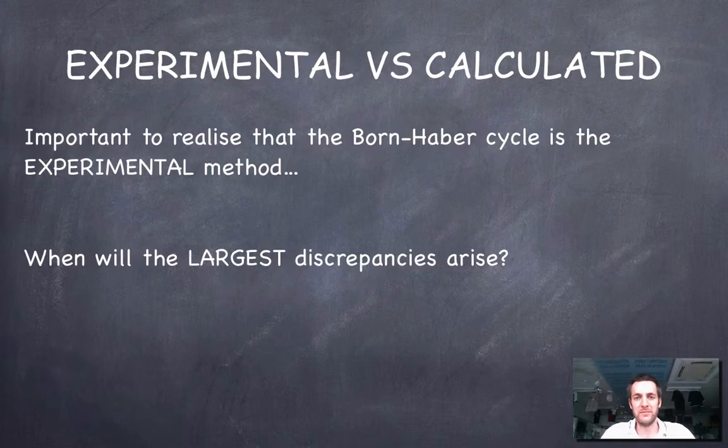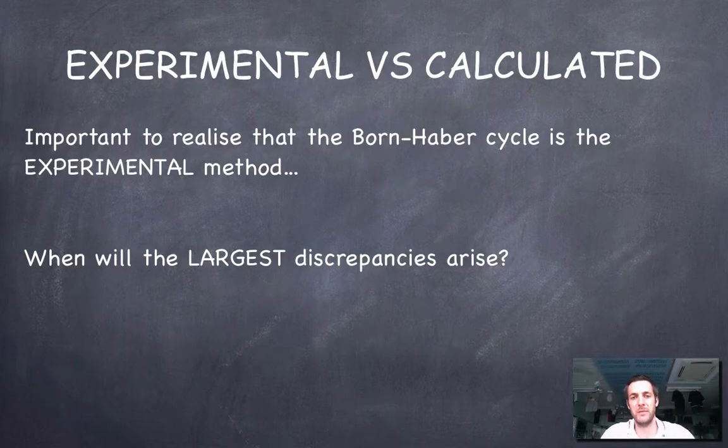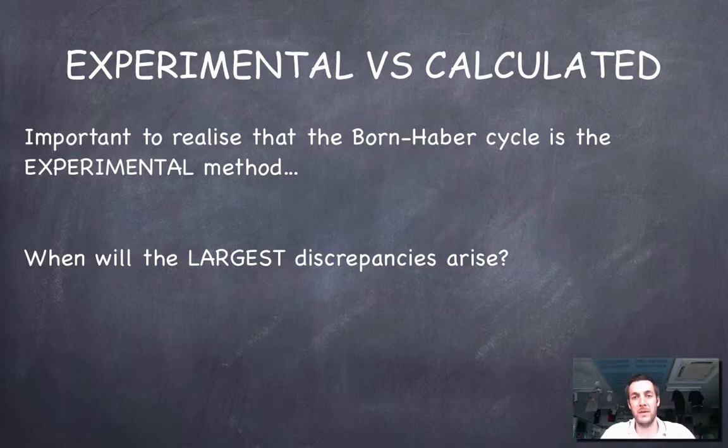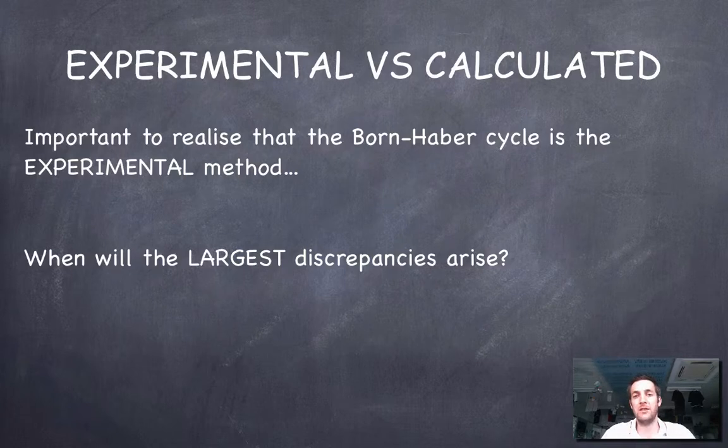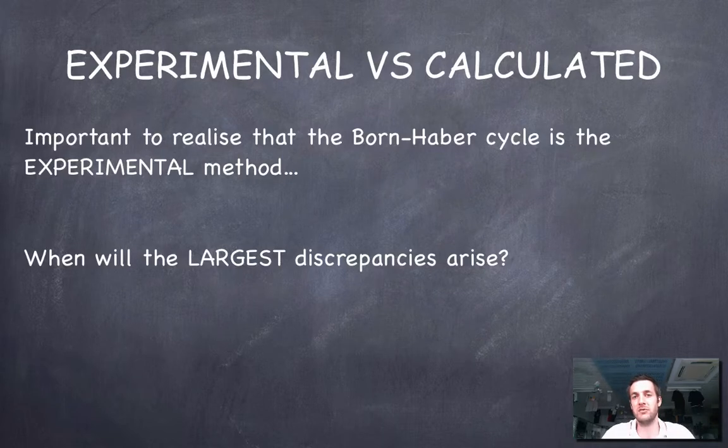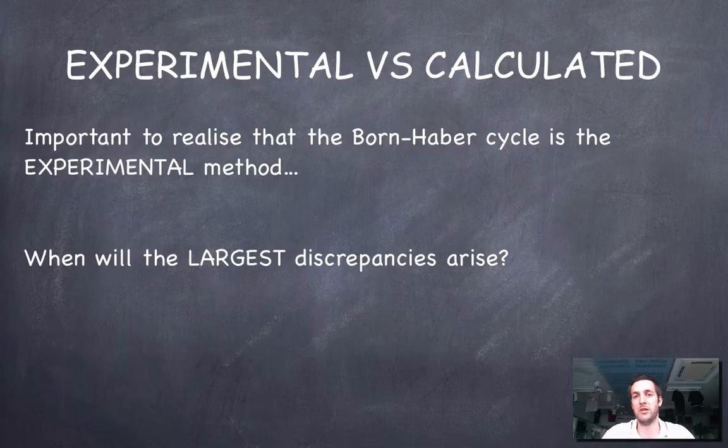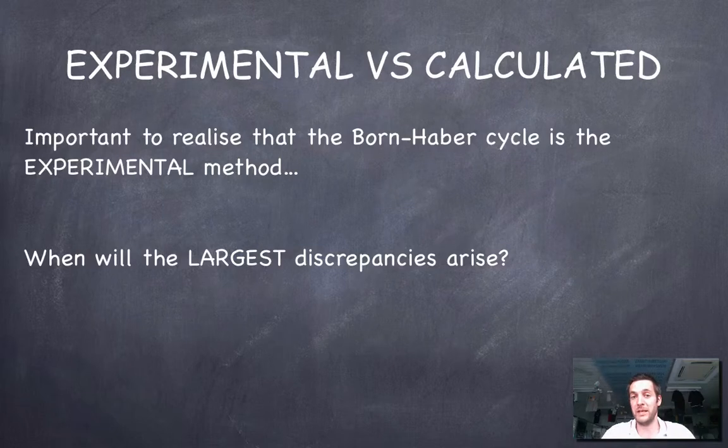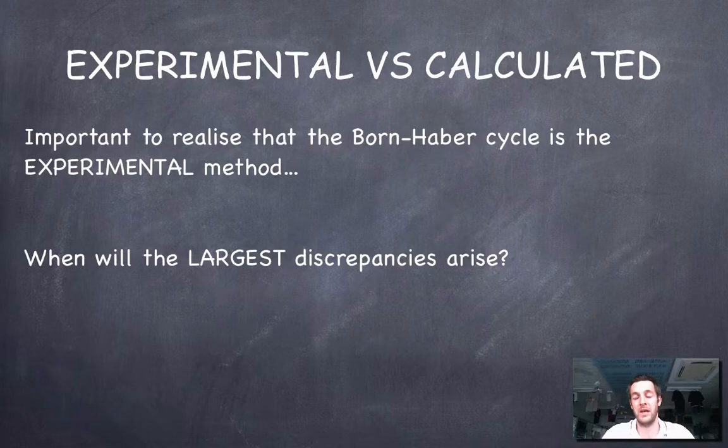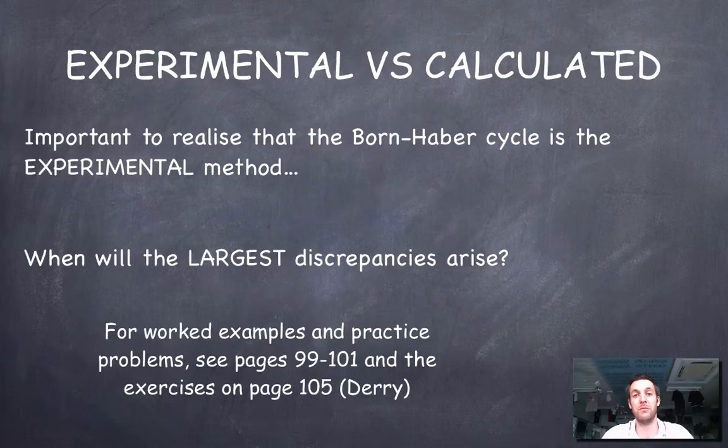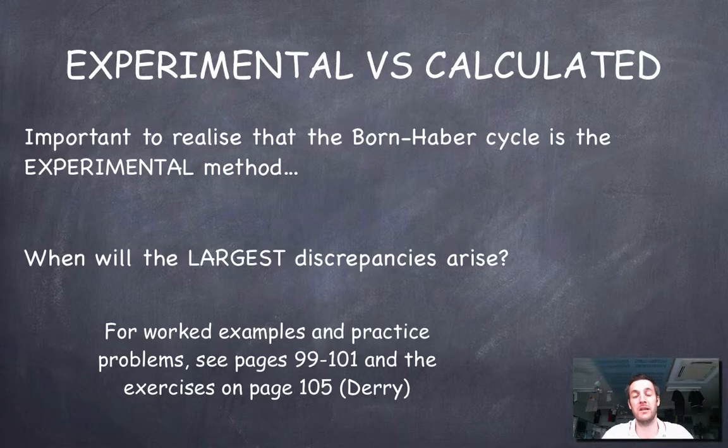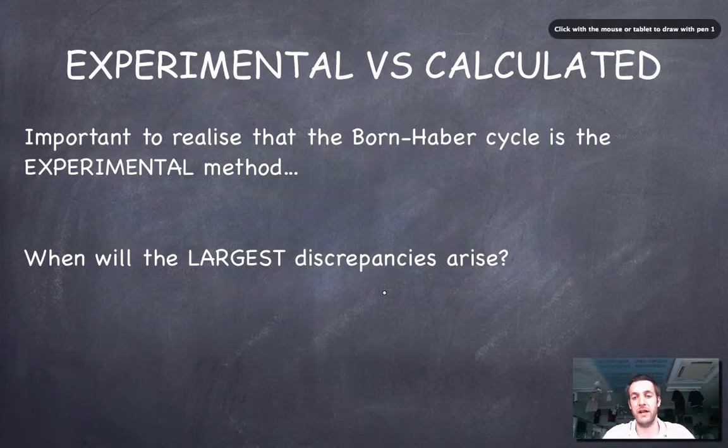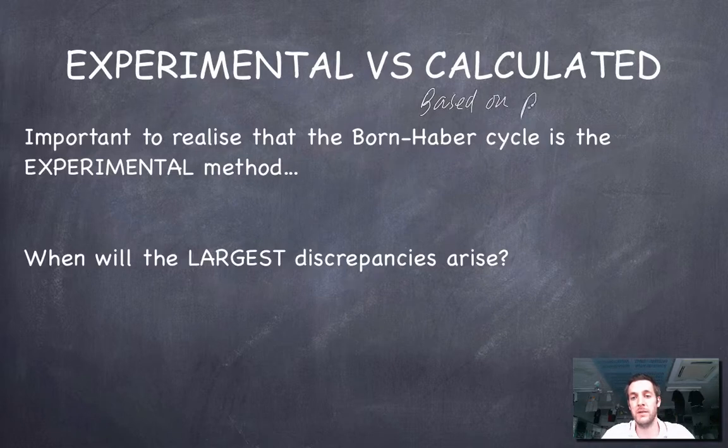Now, that thing that we've just calculated is actually the experimental way of finding a lattice enthalpy. Because each of the values was found from an experiment, we can find a missing value and call it an experimental value. Lattice enthalpies are also calculated using electrostatic principles. So taking into consideration the charge on ions and their size, we can calculate how much energy it ought to take to break them up per mole of lattice. We can't do that in an IB exam, certainly not, but it can be done.